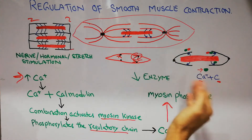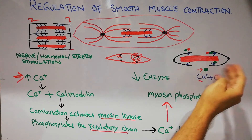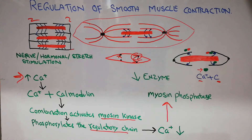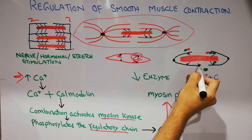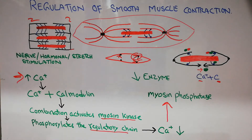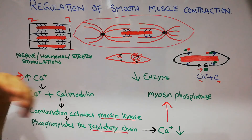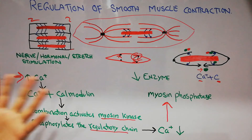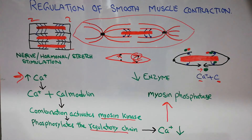When the calcium level increases, calcium combines with calmodulin and activates myosin kinase. Myosin kinase phosphorylates the regulatory chain, which is one light chain of the head of the myosin filament. When this regulatory chain gets phosphorylated, it starts contracting — pulling the thin actin filaments. The actin filaments from both sides move towards each other and contraction occurs. That is how contraction occurs in smooth muscles.